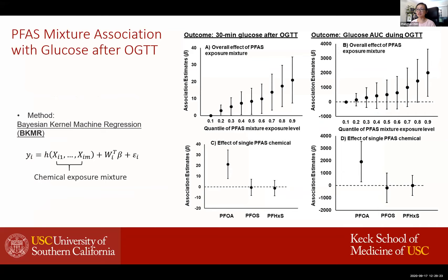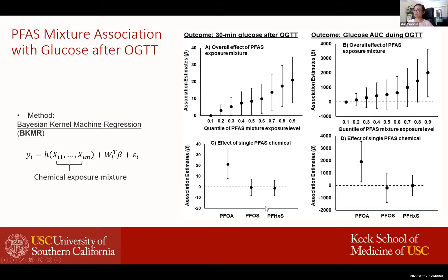This is an example of how we analyze those chemical mixtures for their relationship with different disease outcomes. For example, here we have three PFAS chemicals and we want to understand the total effect of these chemicals' relationship with a certain disease outcome — here, glucose traits. Second, we want to understand among this mixture which could be the most important detrimental component. Here we use Bayesian kernel machine regression analysis to look for the chemical exposure mixture response to the outcome of glucose traits. This figure shows that this mixture is positively related with glucose traits, and among these three chemicals, a specific PFAS chemical is driving the most detrimental impact on higher glucose levels.